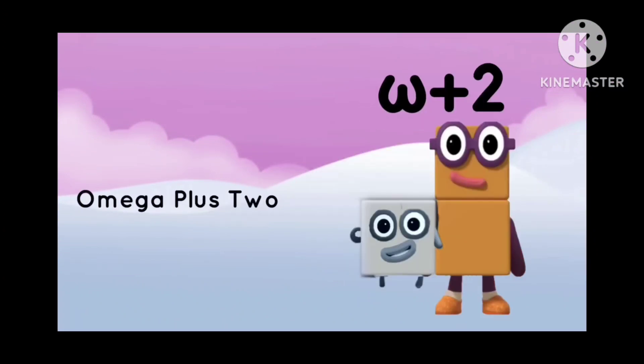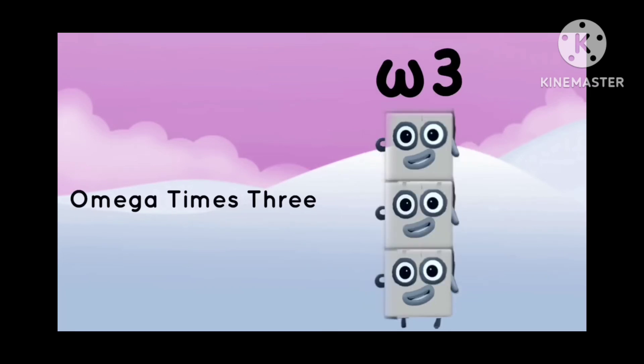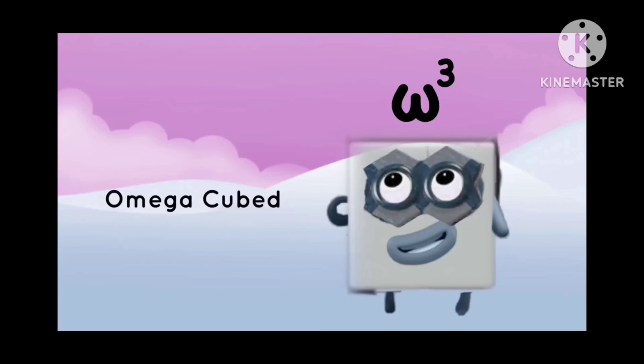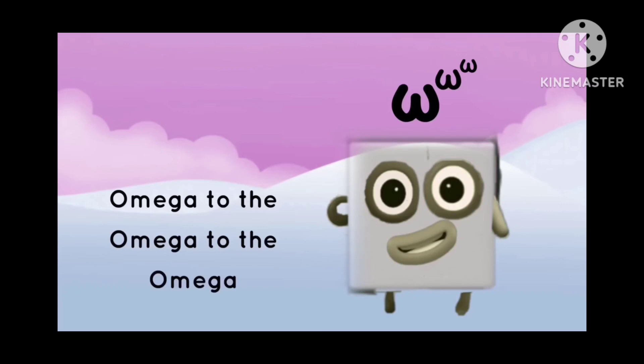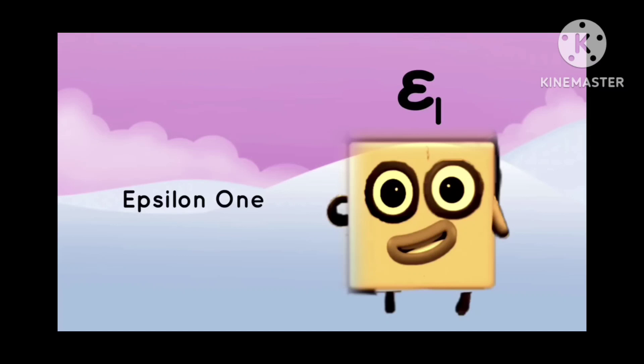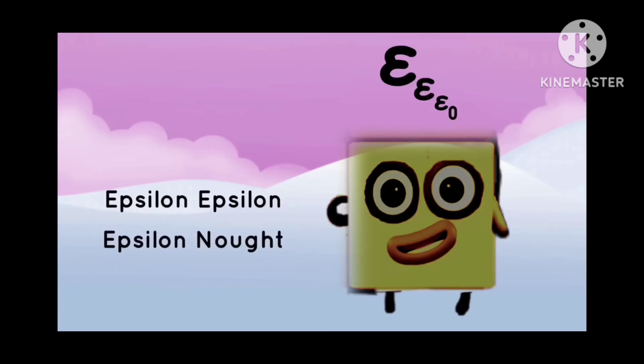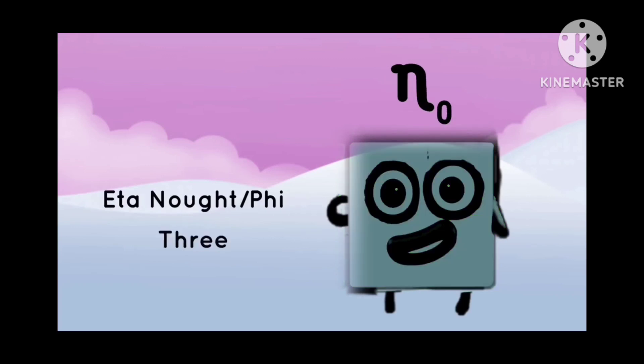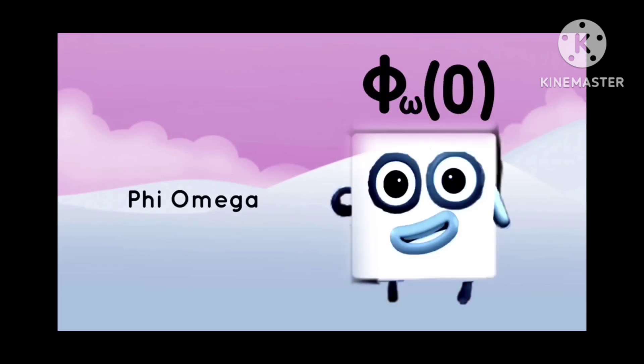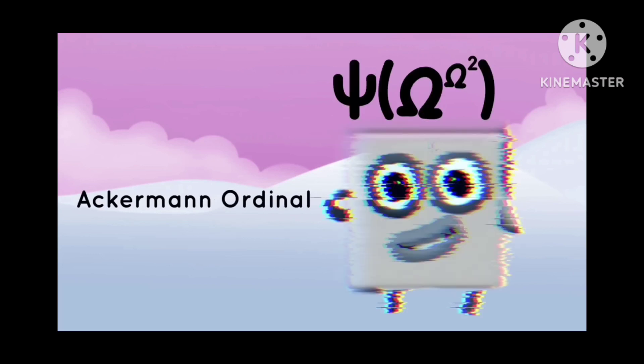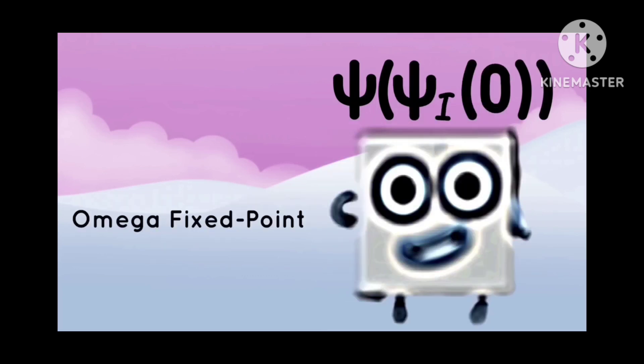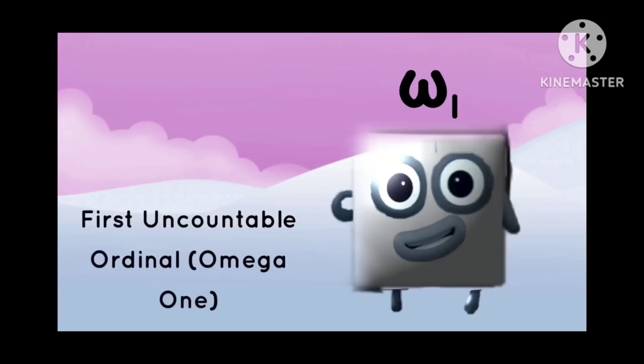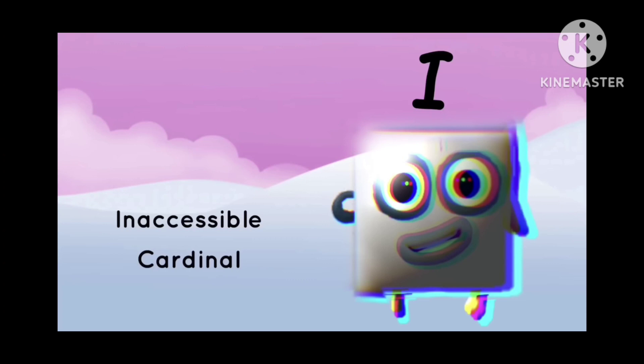Omega to the Omega to the Omega, Epsilon naught, Epsilon one, Epsilon two, Epsilon omega, Epsilon epsilon naught, Zeta naught, Zeta one, Zeta zeta naught, Eta naught, Phi four, Phi omega, Feferman-Schütte ordinal, Ackermann ordinal, Bachmann-Howard ordinal, Omega fixed point, Church-Kleene ordinal, First uncountable ordinal, Inaccessible cardinal, Mahlo cardinal, Weakly compact cardinal, Absolute infinity.